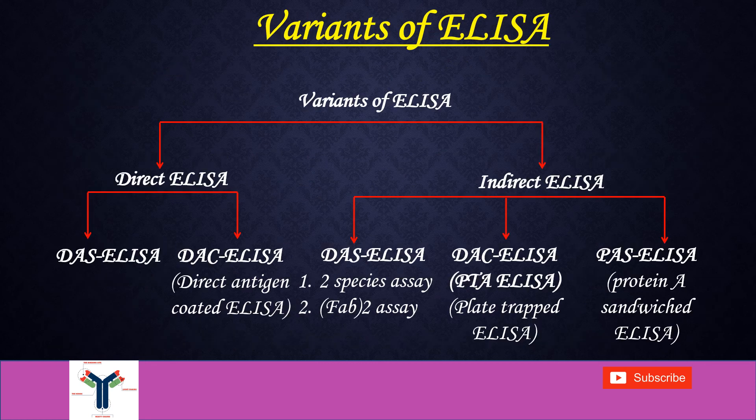There are different types of ELISA. One is direct ELISA and second indirect ELISA. In direct ELISA there are two types: first one is the DAS ELISA, that is double antibody sandwich ELISA, and second is direct antigen coated enzyme-linked immunosorbent assay.